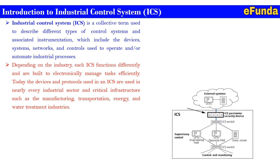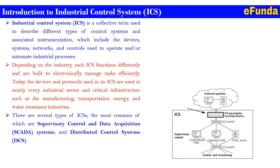Depending upon the industry, each ICS functions differently and is built to electronically manage tasks efficiently. The devices and protocols used in an ICS are used in nearly every industrial sector and critical infrastructure such as manufacturing, transportation, energy, and water treatment industries. The most common types are Supervisory Control and Data Acquisition, that is SCADA systems, and Distributed Control Systems.